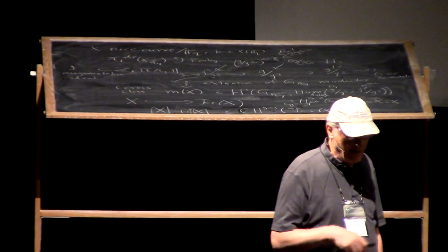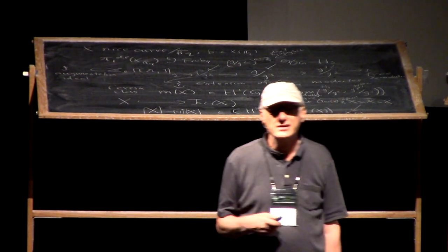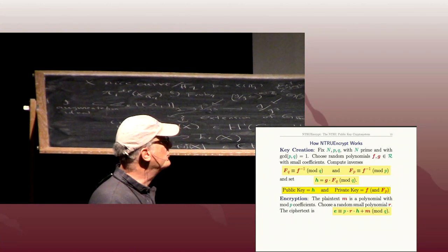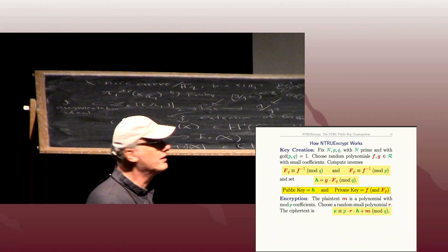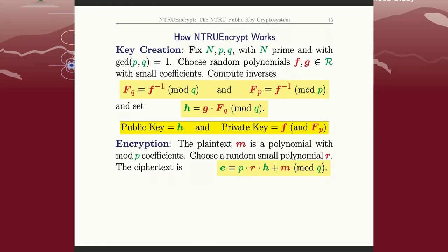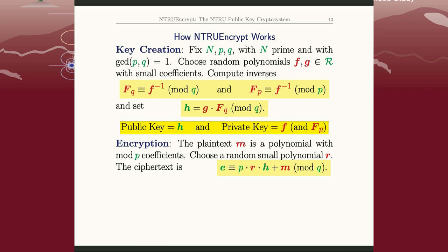How does Bob send Alice a message? His plain text, or his message, is a polynomial with pretty small coefficients, namely mod p. Remember, p was our really small prime. And I said, take p to be 3. And if you take, for example, p to be 3, then Bob's plain text is just a polynomial whose coefficients could also be zeros, ones, and minus ones. Because those are the numbers mod 3. He could use 0, 1, and 2 instead.